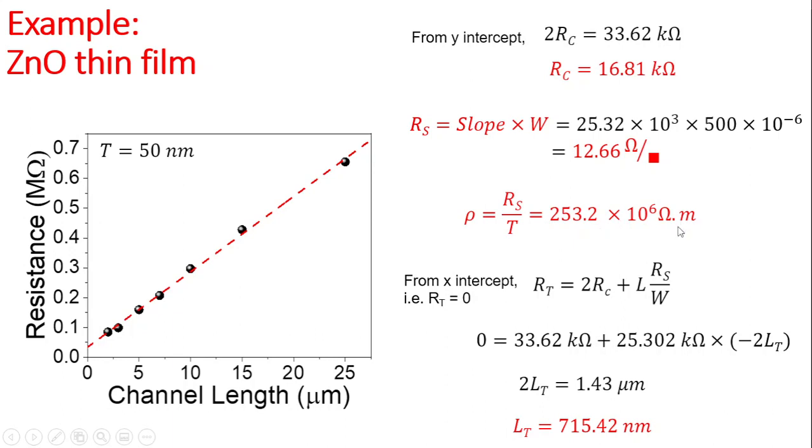You can also obtain the x-intercept, or the place where your total resistance is zero. If you substitute the equations, you'll be able to get transmission length from that. The transmission length is 715.42 nm on each of the electrodes. This is how you can use transmission line measurements to determine the contact resistance, sheet resistance, resistivity, and transmission length.